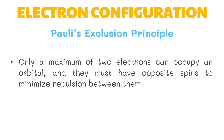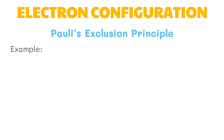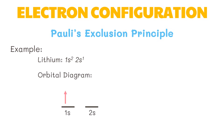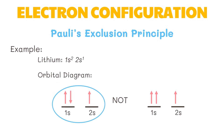To give you a better idea, let's try this example. Consider again lithium, which has the electron configuration of 1s², 2s¹. Its orbital diagram would look like this — not like this. This follows Pauli's exclusion principle that electrons must have opposite spins to minimize repulsion between them.